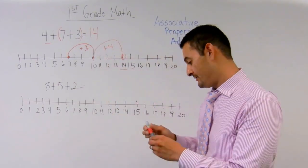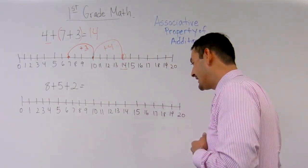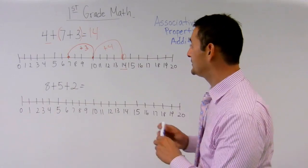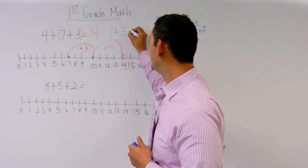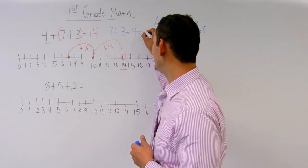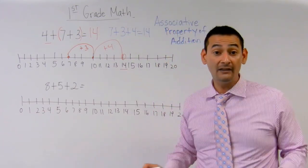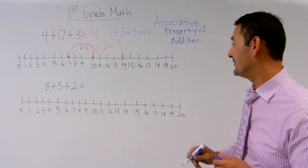So this number could be rewritten this way. We can write this problem again this way. We can write 7 plus 3 plus 4 equals 14. So all I did was I just rearranged the numbers.